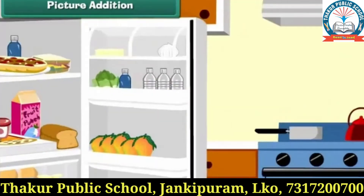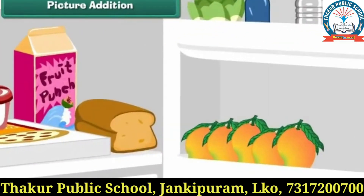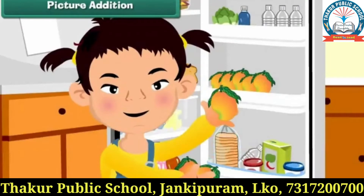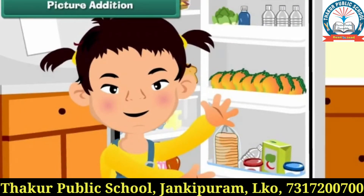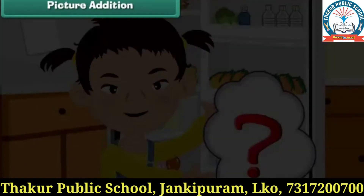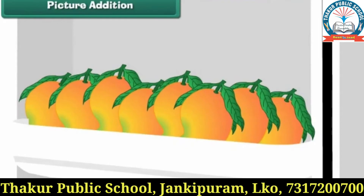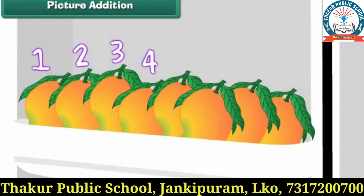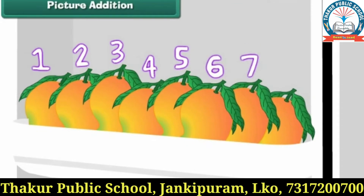There are five mangoes in the refrigerator. Shipra puts in three more. How many mangoes are there in the refrigerator? One, two, three, four, five, six, seven, eight. There are eight mangoes in the refrigerator.